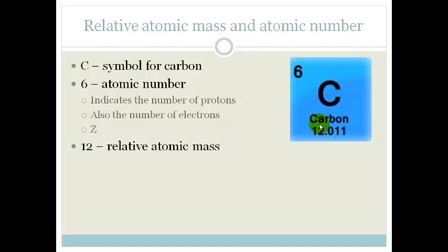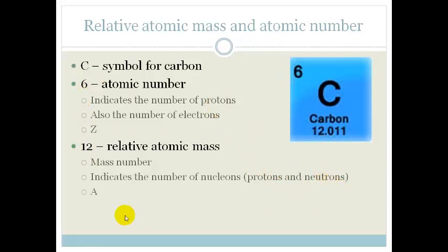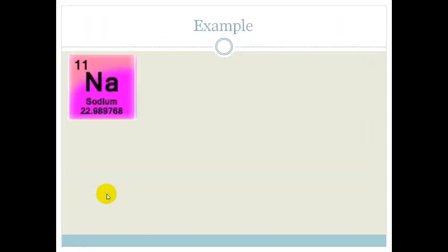12, or in this case admittedly it's 12.011, but we'll talk about that some other time. 12 is the relative atomic mass. This is the mass number and this is the number of all the nucleons. In other words, the protons and the neutrons. So if we want to work out how many neutrons we would have, we would take the 12 and we'd subtract the 6 and we'd find out that we had 6 neutrons. And the symbol for the relative atomic mass is A.